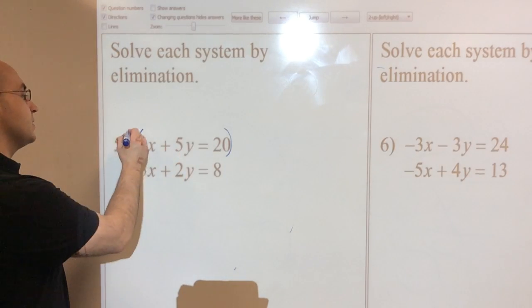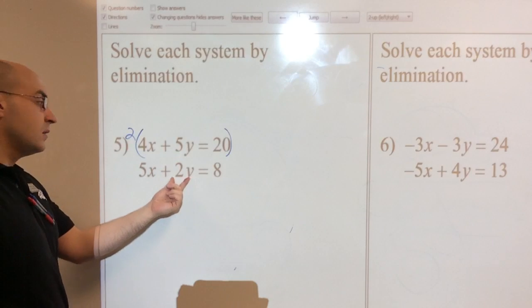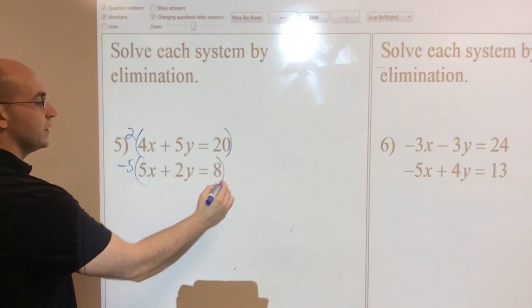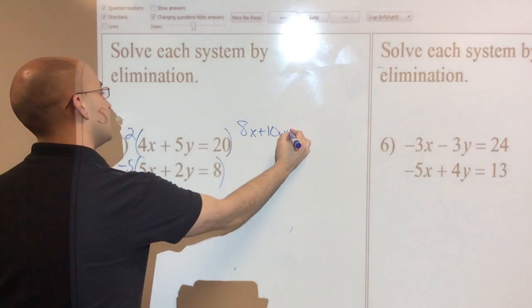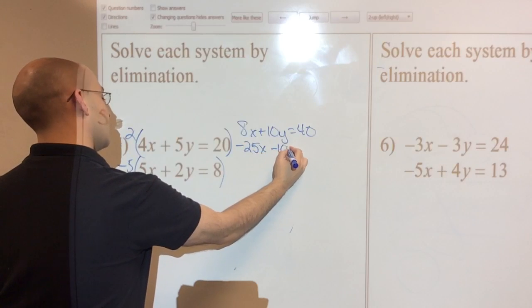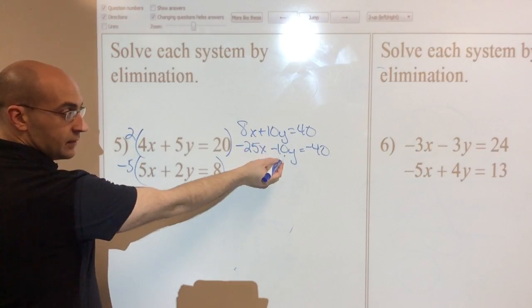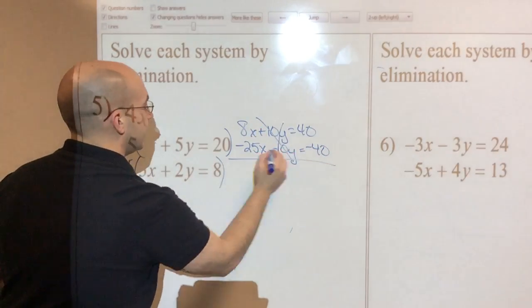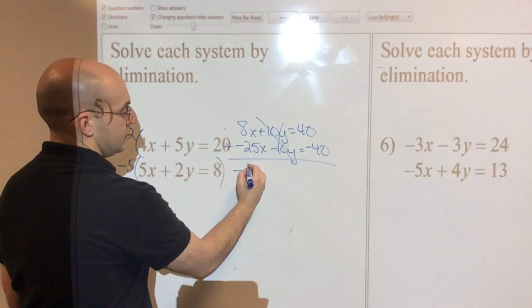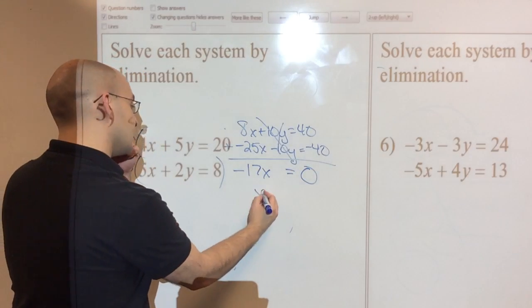I'm going to multiply this top equation by 2, which will give me a 10y. I need the bottom equation to look like negative 10. So I am going to multiply the bottom equation by negative 5. So let's go ahead and do that. 8x plus 10y equals 40. And negative 25x minus 10y equals negative 40. I have gotten what I wanted here. I have got the opposites for the y's. So that crosses out. Now I am going to add down. Negative 17x is going to equal, well that is easy, 0. So the only thing x can be is 0.